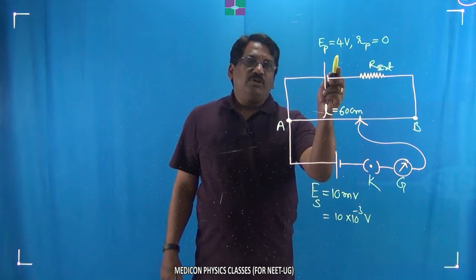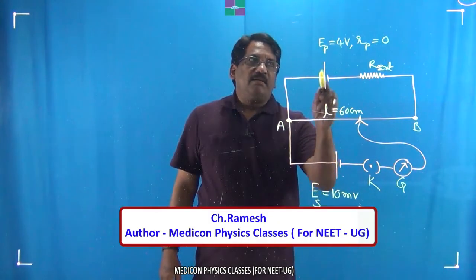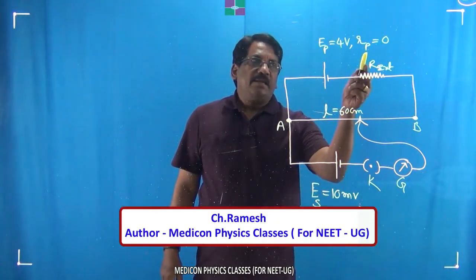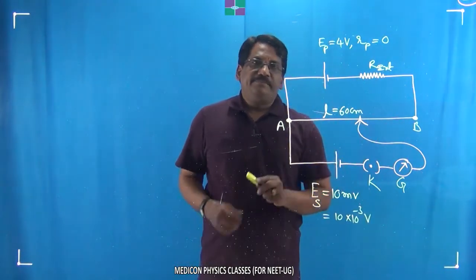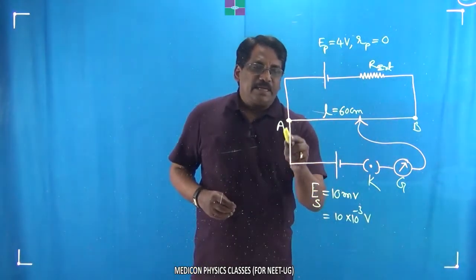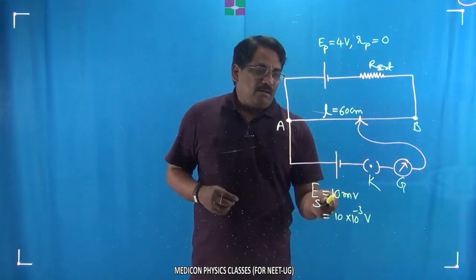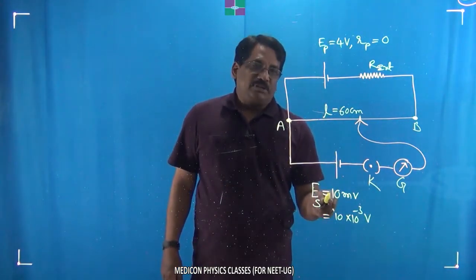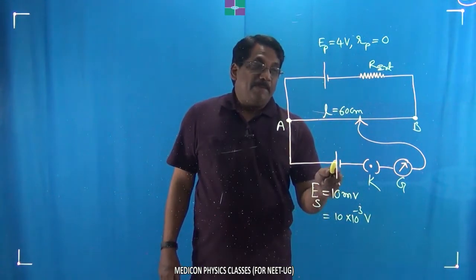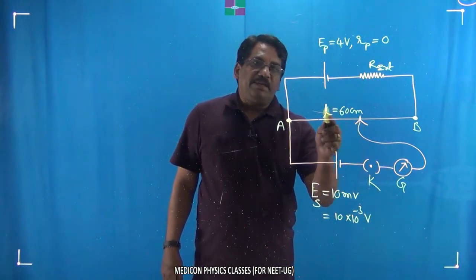cell of EMF 4 volts—an ideal cell of zero internal resistance—and some external resistance are connected. In the secondary circuit, a cell of EMF 10 millivolts is balanced by a length of 60 centimeters